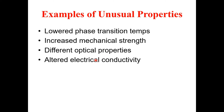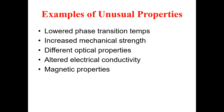Semiconductors have a gap between the valence and conduction band, while insulators have a large band gap which cannot be crossed regardless of the amount of energy supplied. So the electrical properties change at the nanoscale because at the nanoscale the band gap is widened, and that's why the material's electrical properties change.